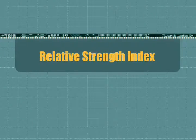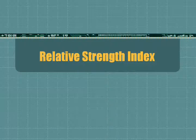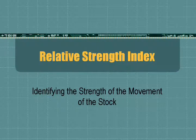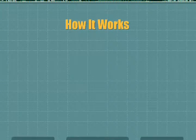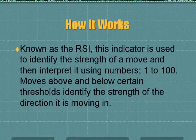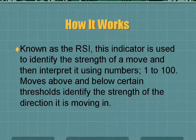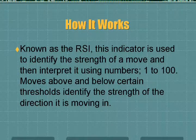My name is John Milant from EmpoweredInvestingNow.com and we're going to do some training on using the Relative Strength Index — very valuable. It identifies the strength of the movement of the stock. Known as the RSI, this indicator is used to identify the strength of the movement and then interpret it using numbers 1 to 100, moving above and below certain thresholds to identify the strength of the direction it is moving in.